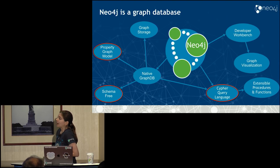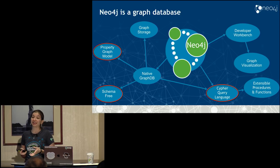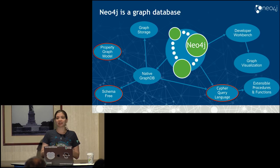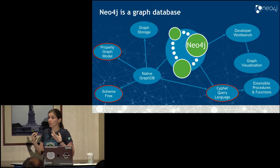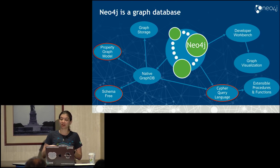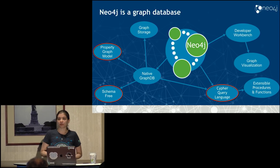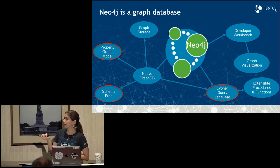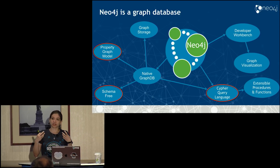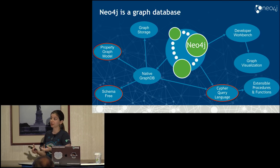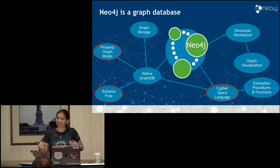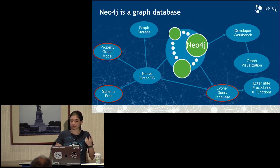What about graph database-specific stuff? Neo4j is a native graph database. We like to say it's 'graph all the way down.' Some graph databases have a table and indexing underneath to do lookups and find relationships. We don't do that — our database chases memory pointers to track down graph traversals. That's our graph storage layer. We use the property graph data model to structure, store, and view our data. And Neo4j is schema-free, which allows you to be very flexible with your data model and change it as your business or market changes. You put data in and take data out using the Cypher query language.